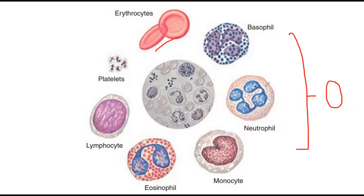The stem cell divides via mitosis to give rise to different cell types. There are many different chemical messengers and signals that give orders to the stem cells — for example, if neutrophil levels drop, a signal is sent to the stem cell indicating a low level of neutrophils, and the stem cell then gives rise to neutrophils.